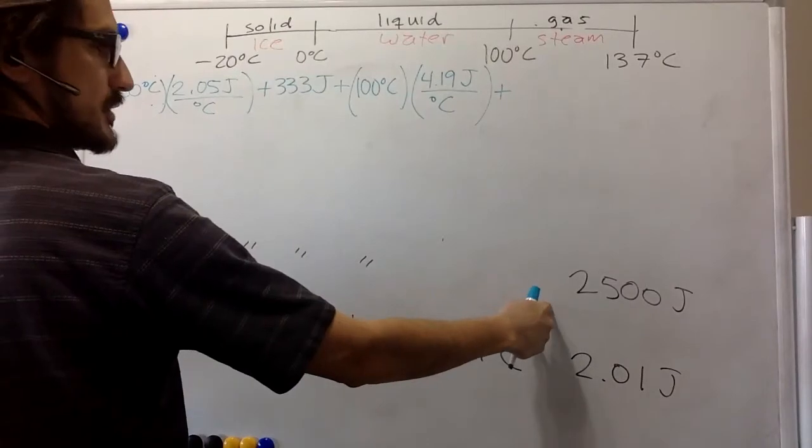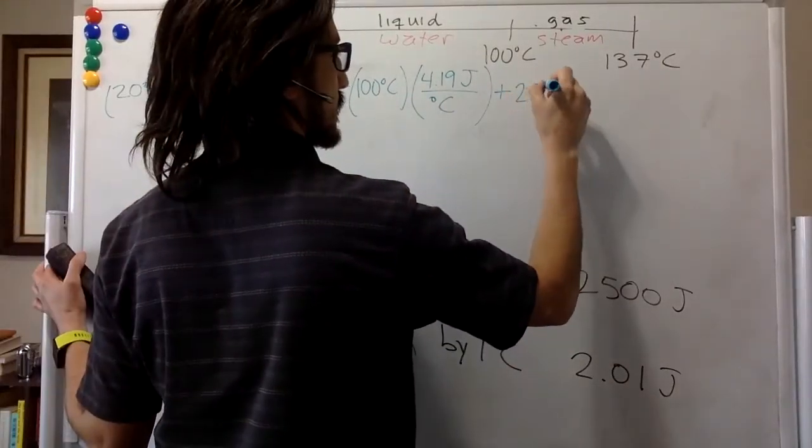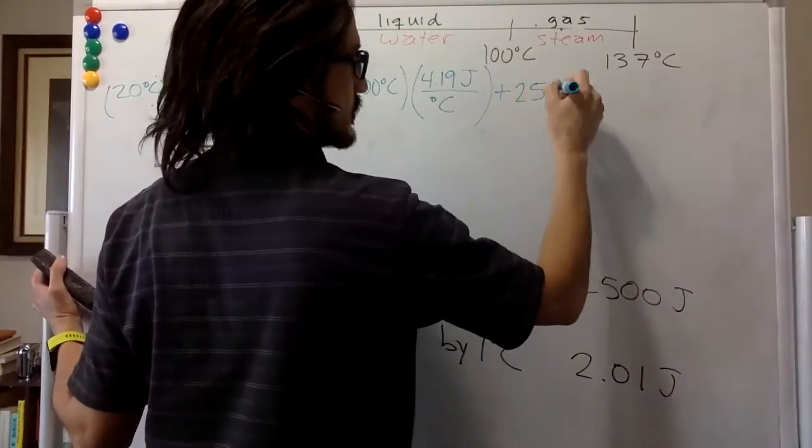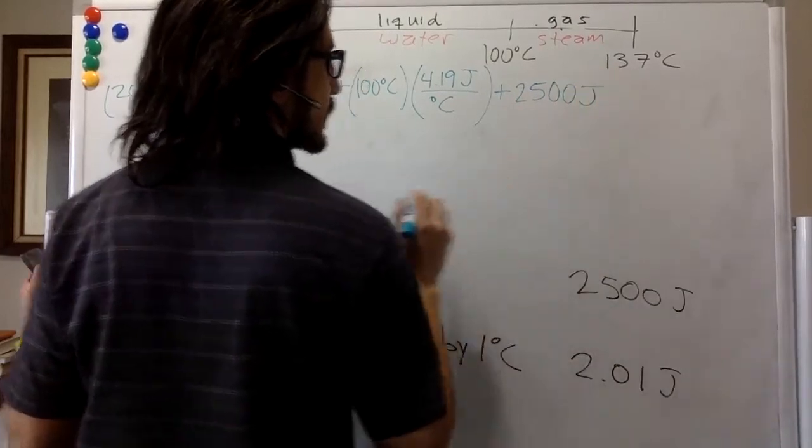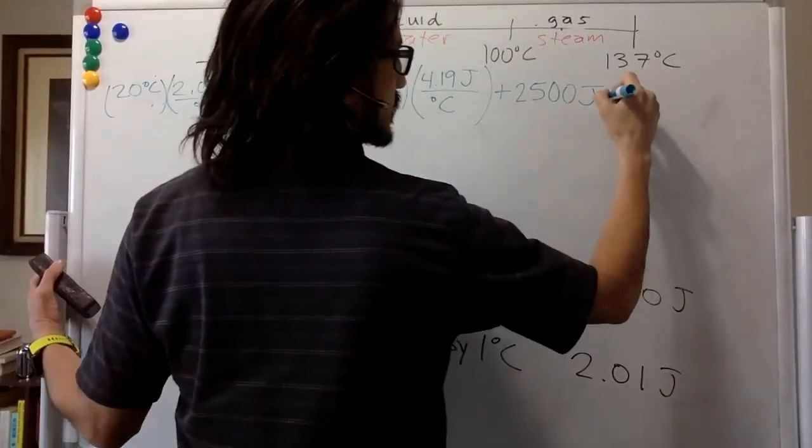So that price is 2,500 joules per gram, but this is still one gram of water.